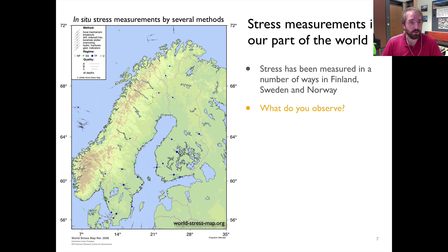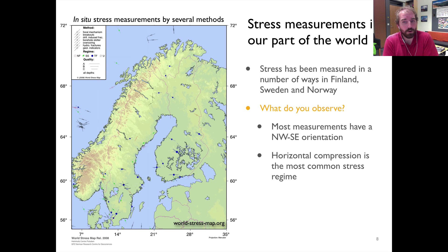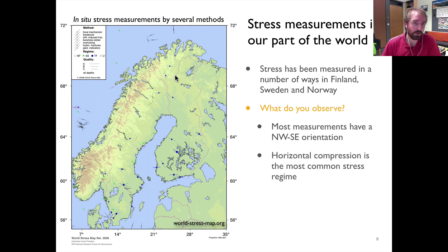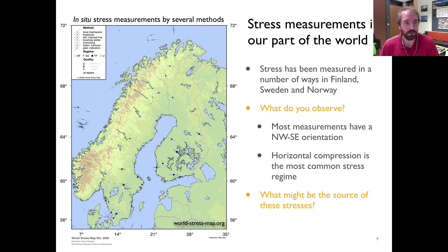Hopefully you've noticed that most of the symbols here have a northwest-southeast orientation — not all of them, but in general, most trend northwest-southeast. You can see this commonly across central parts of Finland as well as further north. In addition, most of the symbols indicate horizontal compression or thrust fault-type motion as the most common stress regime. Now, what might be the source of these stresses? Pause the video and take a moment to think about what might be causing the observed pattern.